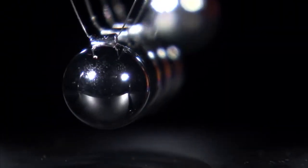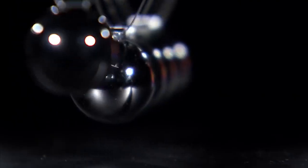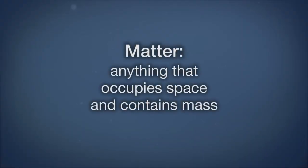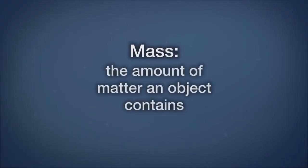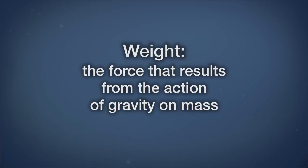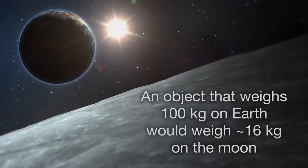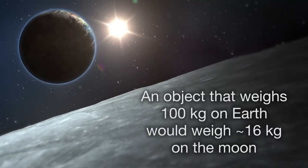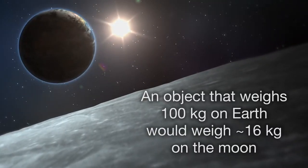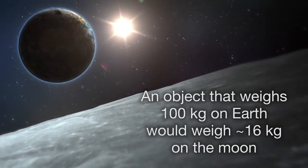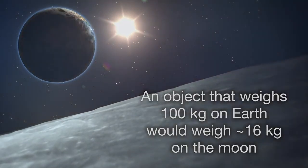Matter is anything that occupies space and has mass. The mass of an object is defined as a measure of the amount of matter it contains. Mass is different from weight. Weight is the force that results from the action of gravity on mass. For instance, your weight on the moon would be different than your weight on Earth because the moon has a different gravitational field than Earth, but your mass would be the same.